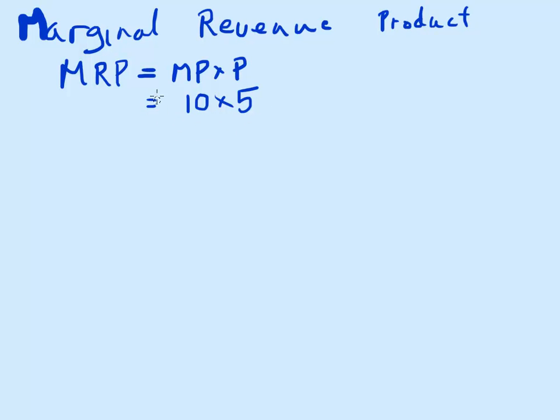That means my marginal revenue product is 10 times 5, which is $50. So as an employer, that worker would generate $50 for me if they produce 10 units in that hour and I can sell each unit for $5 each.